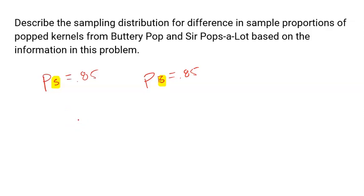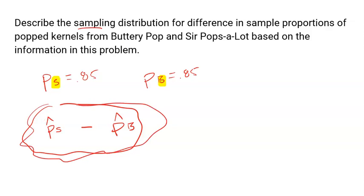Now, what Harry is going to do is he's going to look at a sample from Sir Pops-a-Lot, he's going to look at another sample from Buttery Pops, and he's going to look at the difference between that sample proportions. Now, a sampling distribution talks about all possibilities for the difference between a sample from Sir Pops-a-Lot and a sample from Buttery Pops. So they want us to describe the sampling distribution that's going to show all possible differences.